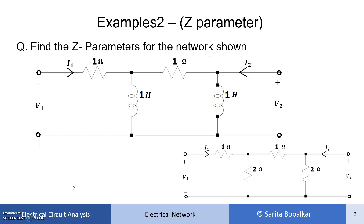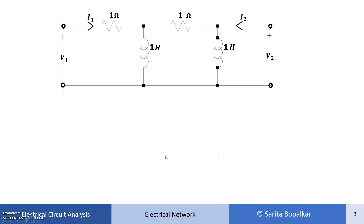We know that Z parameters means we are expressing V1 and V2 in the form of I1 and I2. For that, as in the previous example, we apply KVL to the different meshes — mesh 1, mesh 2, and mesh 3.